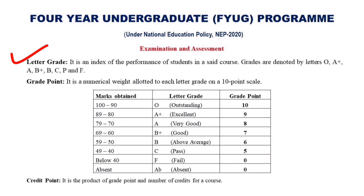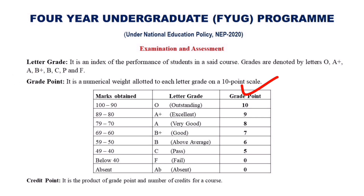The grades are denoted by letters O, A+, A, B+, B, C, P, and F. There is a grade point associated with each letter grade. Grade point is a numerical weight allotted to each letter grade on a 10-point scale. If a student secures marks in the range 90 to 100, they will get a letter grade O, and for that the student will get a grade point of 10.